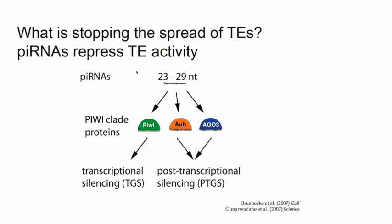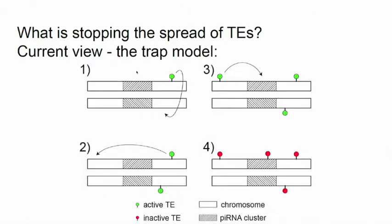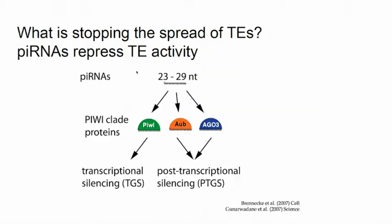We think what's responsible for this stopping is piRNAs. What are piRNAs? These are small RNAs of size 23 to 29 nucleotides that interact with PIWI-clade proteins like Piwi and Aub, and are responsible for transcriptional and post-transcriptional silencing. They bind to these proteins and repress the P element entirely. The question is: where are these piRNAs coming from, and why do they suddenly appear out of nowhere?